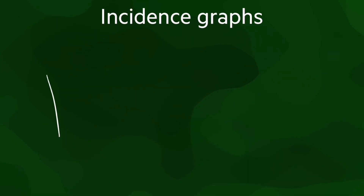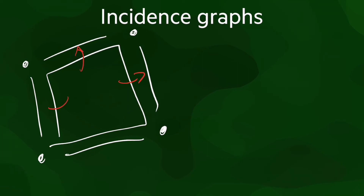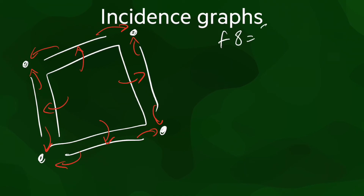Finally, in an incidence graph, we have separate data structures for polygons, for edges, and for vertices. Each polygon stores links to the edges that bound it, and each edge to the two vertices that bound it. An implementation would look something like this.